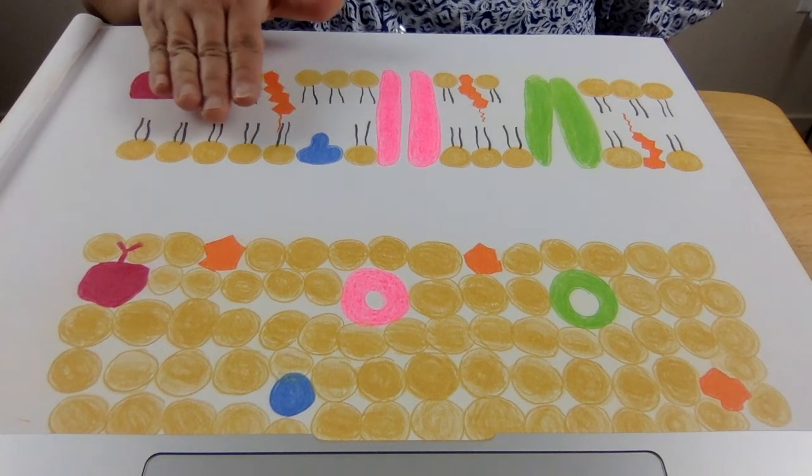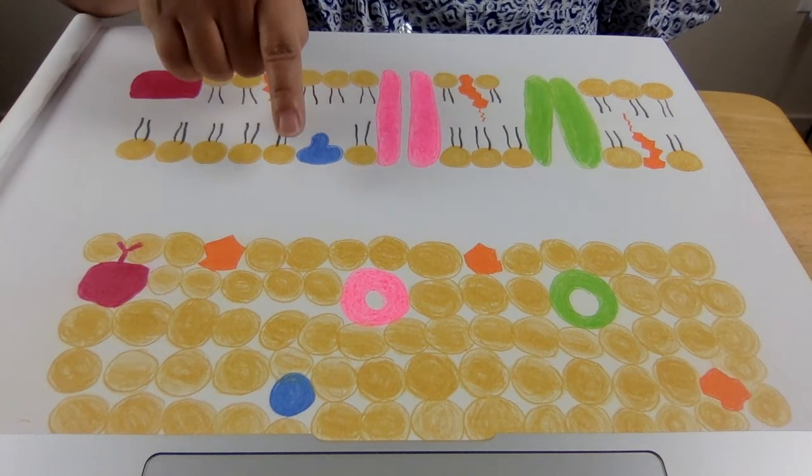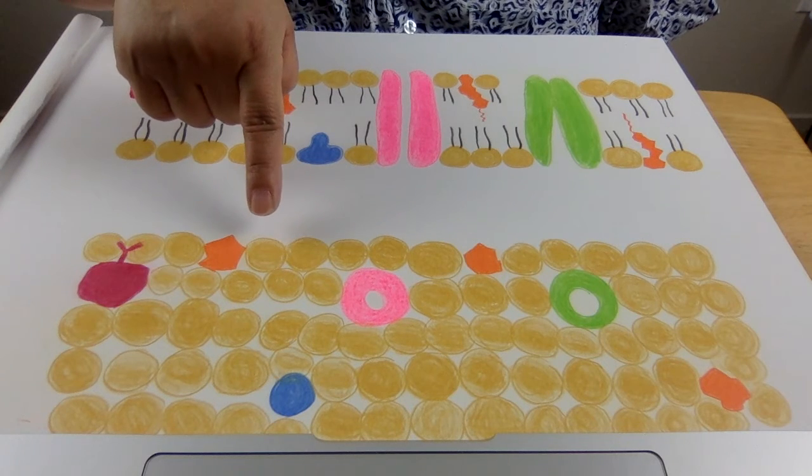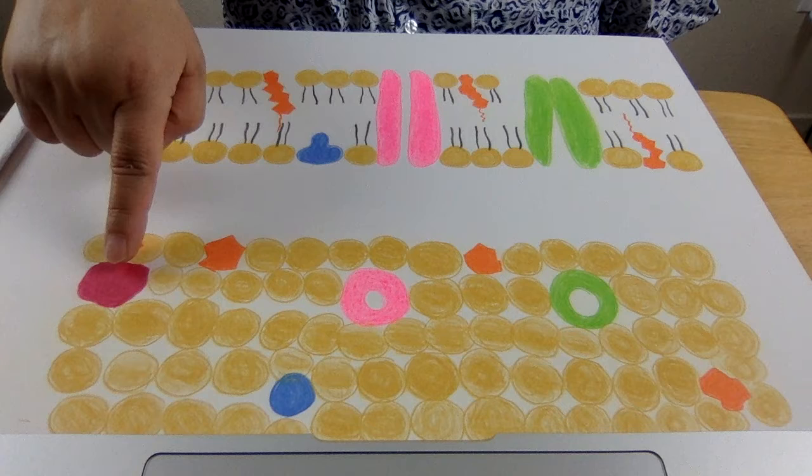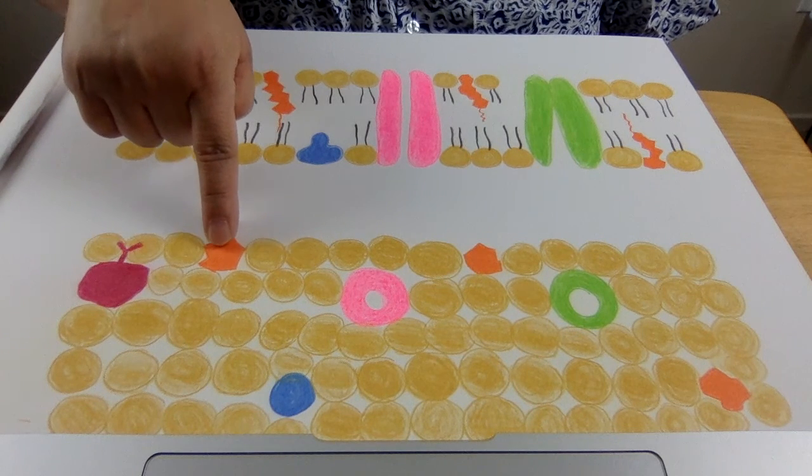So this is the side view, and this is the top view. We can see the membrane carbohydrates and proteins.